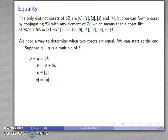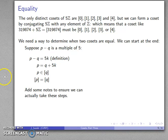Now, it's a good habit to get into to add some notes to make sure you can actually take these steps. So let's see. P minus Q equals 5k. Well, I am assuming that P minus Q is a multiple of 5. And so that says, by definition, P minus Q has to be 5 times something. I can do a little bit of algebra. Make sure that this is actually algebra in the integers. We're allowed